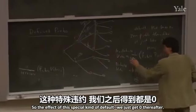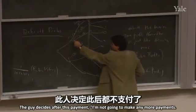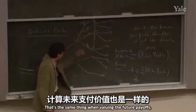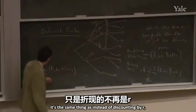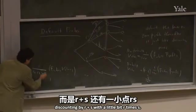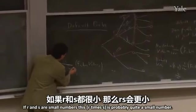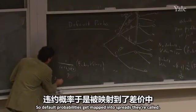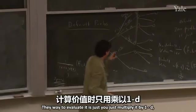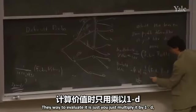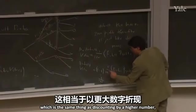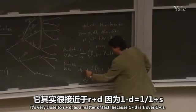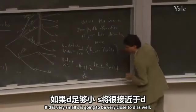The effect of this special kind of default — where you get 0 thereafter — is the same as instead of discounting by R, discounting by R plus S, with a small R times S cross term. If R and S are small numbers, that cross term is negligible. So default probabilities get mapped into what are called spreads. The way to evaluate it is to multiply by (1 minus D), which is the same as discounting by a higher number. That higher number is very close to R plus D when D is small, since (1 minus D) ≈ 1 over (1 plus D) for small D.